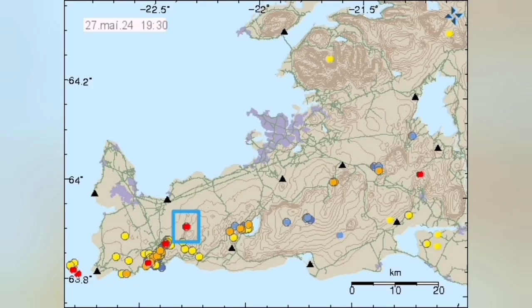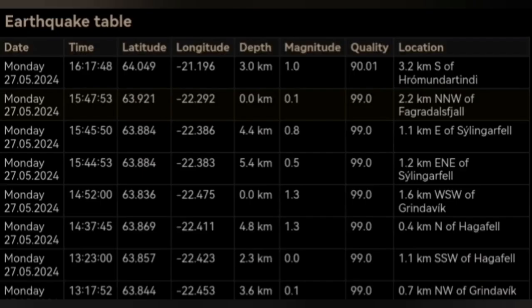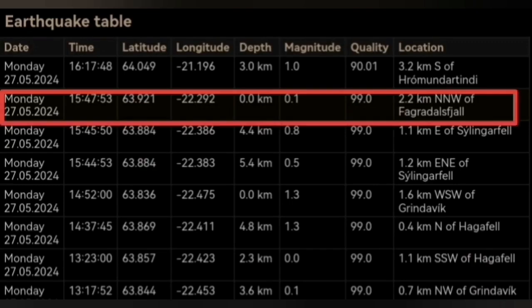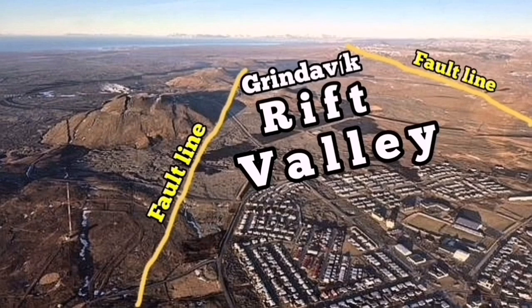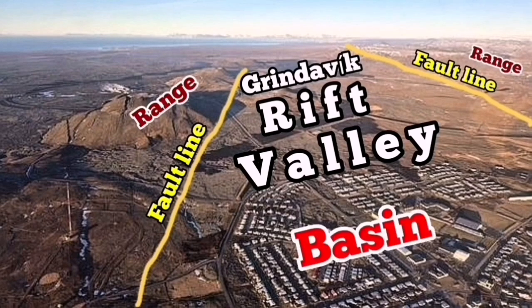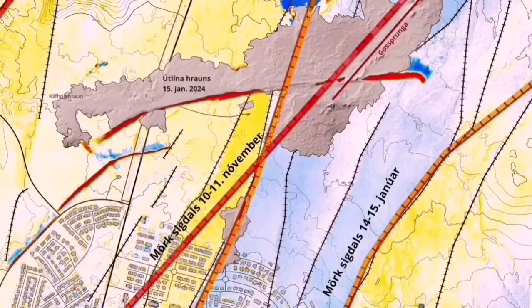That is exactly on the plate boundary. When we look at the depth of it, this is at zero depth, 2.2 kilometers north of Fagradalsfjall. That's practically exactly on the plate boundary. We see it was a small one. This is the Grindavik rift valley.